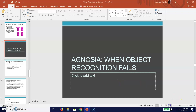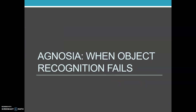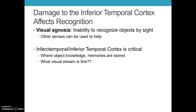We're going to talk a little bit more about those what and where pathways. When you damage parts of the ventral stream — that what pathway — you can occasionally develop something known as agnosia, which is when you are not able to recognize objects on the basis of sight. Damage to the inferior temporal cortex affects recognition. Visual agnosia is defined as the inability to recognize objects by sight.